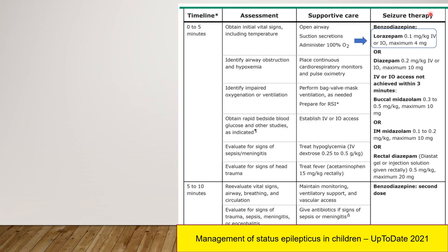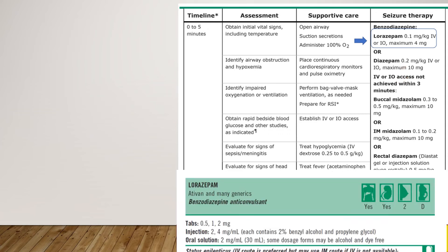To summarize, I have used the UpToDate 2021 algorithm for management of status epilepticus in children, focusing only on drug treatment. The algorithm covers assessment and supportive care, but our subject is initial drug treatment. At five minutes, give benzodiazepine — lorazepam 0.1 mg/kg IV, maximum 4 mg. Alternate medicines are also available. The key question is how fast to give it.